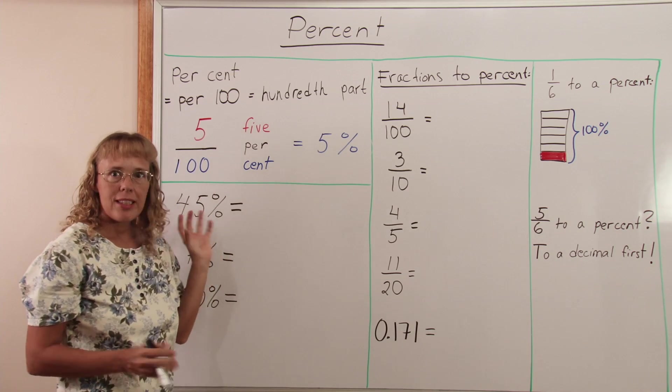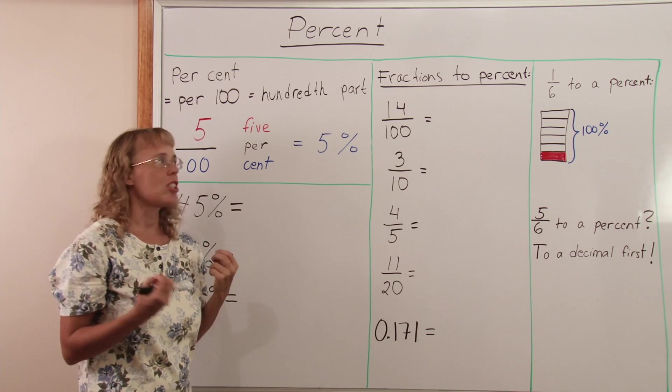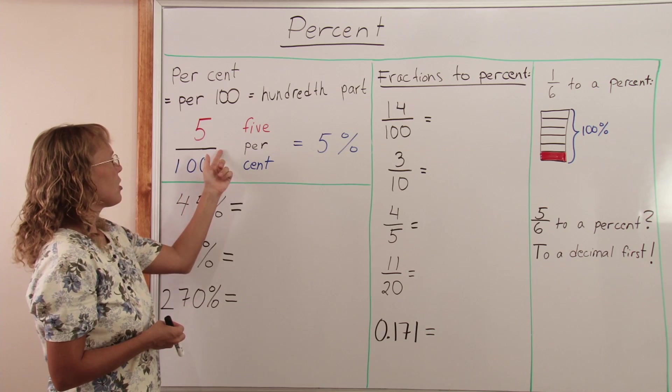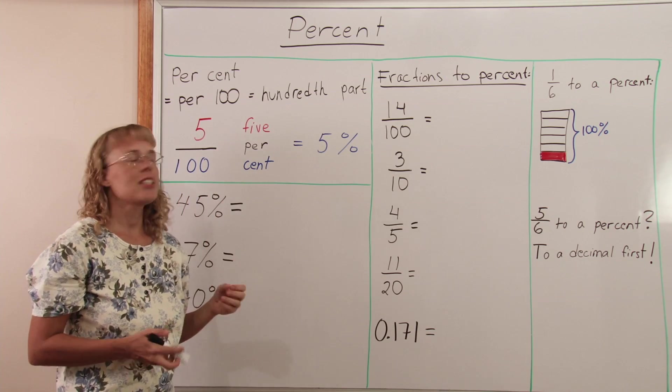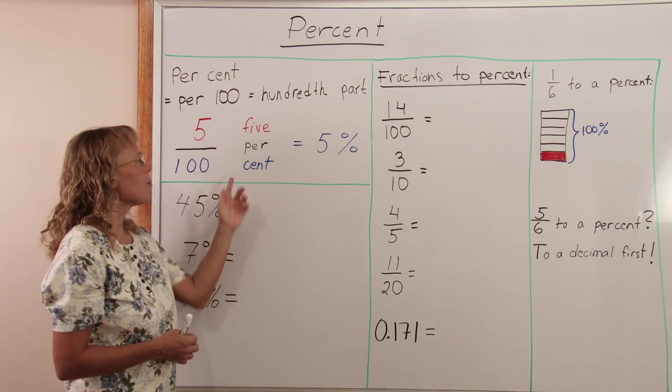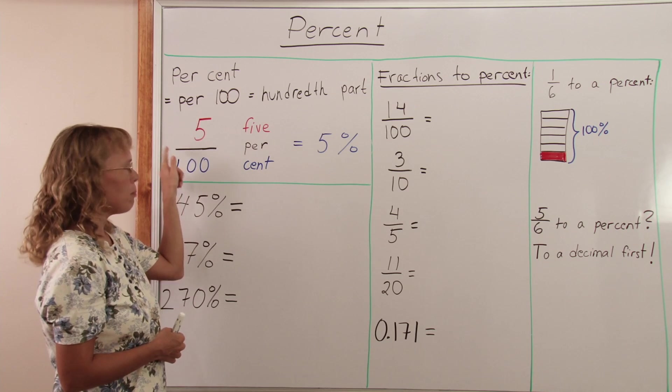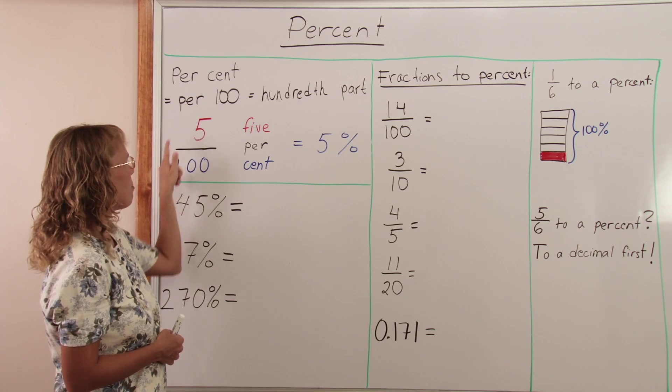Think of it this way. Think of the per as the division. Per is the division and then cent is the hundred. It comes from the latin word for hundred. Five per cent or five per hundred.